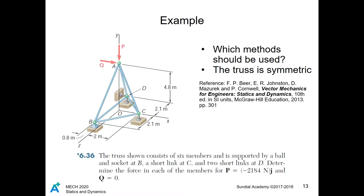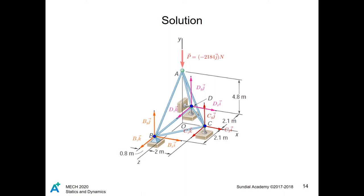Let's do a problem using the methods we just learned. Please pause the video and take five minutes to attempt this problem yourself. Now that you have attempted this problem yourself, let's go over our approach. We construct the free body diagram of all points in the picture. From the picture shown here, it appears much simpler to calculate using the method of joints over the method of sections, since we need to solve the entire structure. We will use the method of joints.